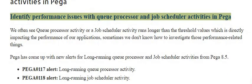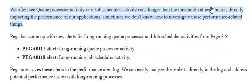We often see queue processor activity or a job scheduler activity runs longer than the threshold values, which is directly impacting the performance of our applications. Sometimes we don't know how to investigate those performance related things.